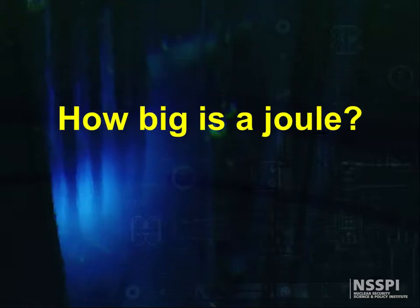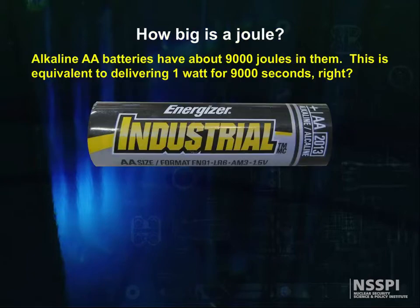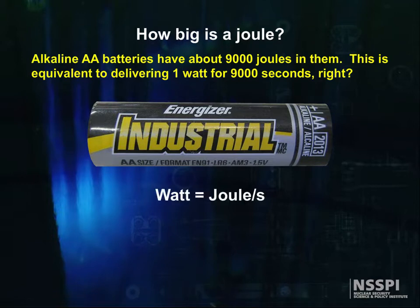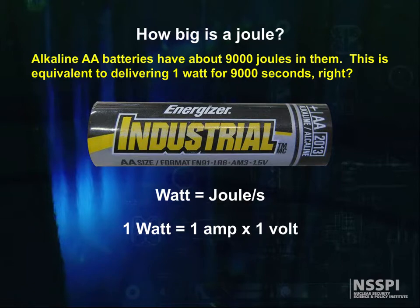Before we march too far away, let me give you an idea of how big a joule is. It helps a lot to have some mental idea of how big things are, so you can see if your calculations make any sense. An alkaline AA battery has about 9,000 joules in it — this is equivalent to delivering 1 watt for 9,000 seconds. A watt is a unit of power equal to 1 joule per second. 1 amp times 1 volt equals 1 watt.